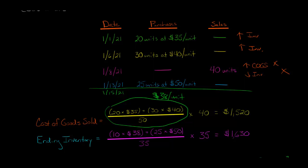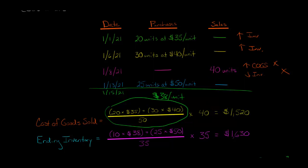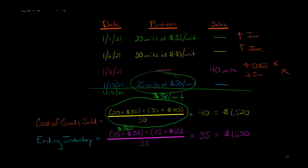To calculate ending inventory, we consider that before, when we had the average cost of $38 a unit, we multiplied it by 40 — that was what we sold. There were actually 50 units in inventory at that time, so there were 10 units remaining at $38 a unit, which is $380 of costs that did not go to cost of goods sold at that point in time.